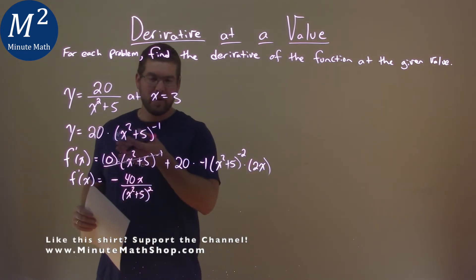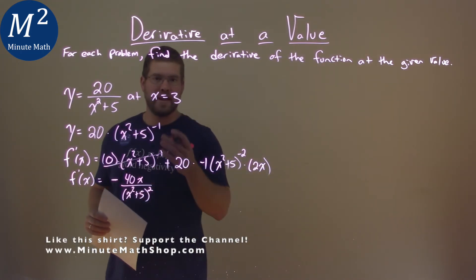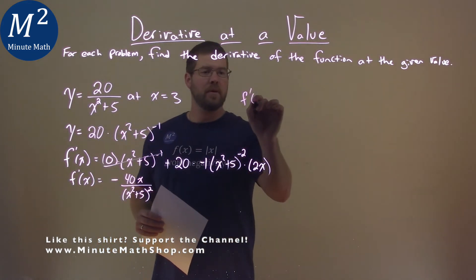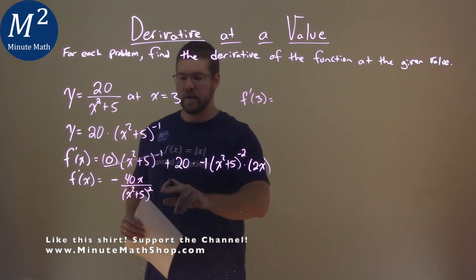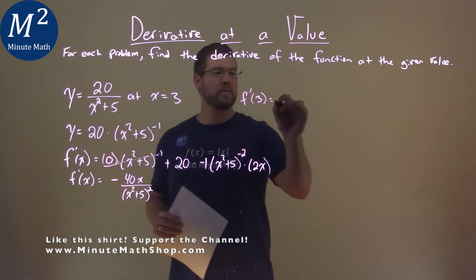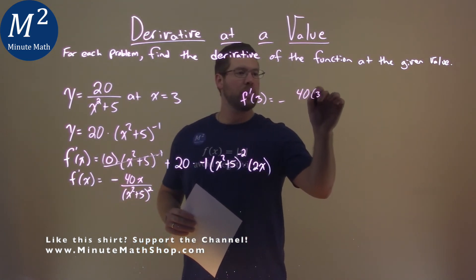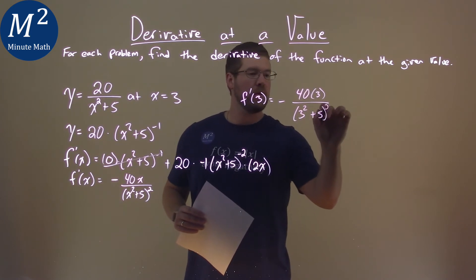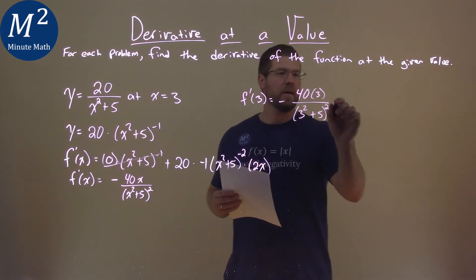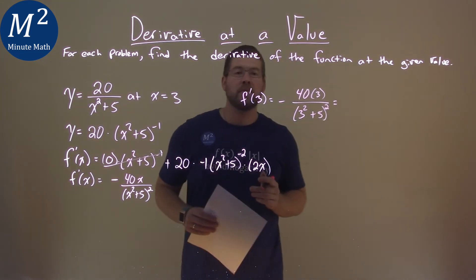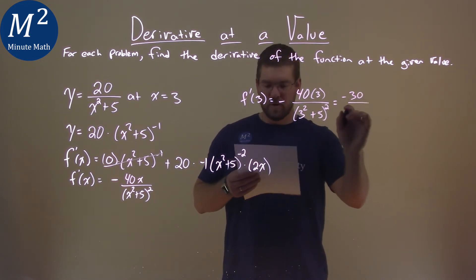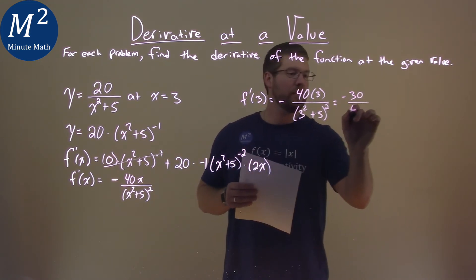So now, with our derivative, we can find what happens at x equals 3. Let's find f prime of 3 by plugging that in for x. We have negative 40 times 3 over 3 squared plus 5, all squared, which simplifies to be negative 30 over 49.